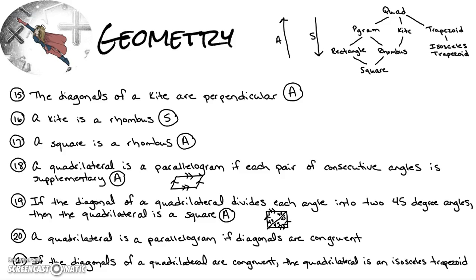In a rectangle, the diagonal does not bisect the angles equally — you can see one angle is smaller than the other. Number twenty: a quadrilateral is a parallelogram if the diagonals are congruent. That's sometimes true; the case when it wouldn't be is an isosceles trapezoid, where the diagonals are also congruent but it's not a parallelogram.